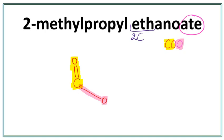Now the carbon in the functional group is always the first carbon. So we need two carbons in total, so we're just going to draw another carbon here.